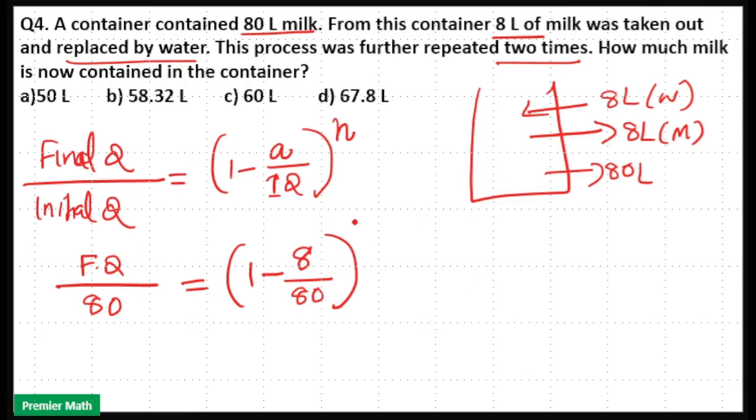And number of processes is equal to 2 plus 1 equals 3, because the process happened and it is repeated two times, that is 1 plus 2 equals 3.